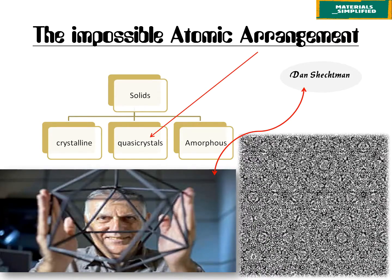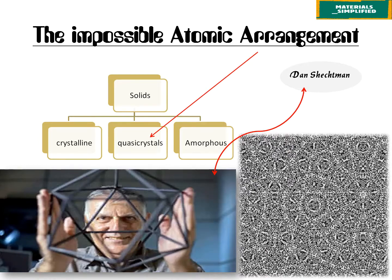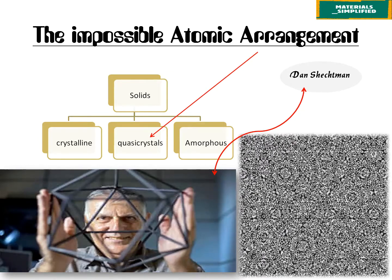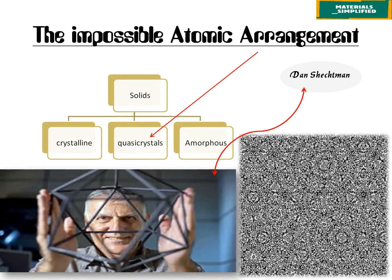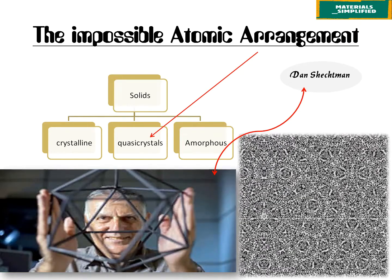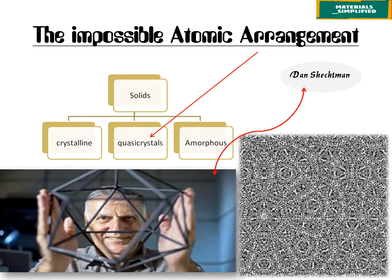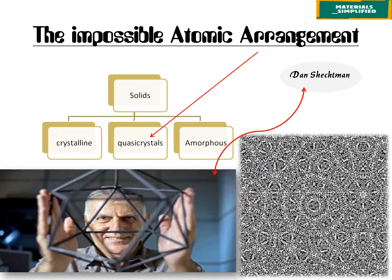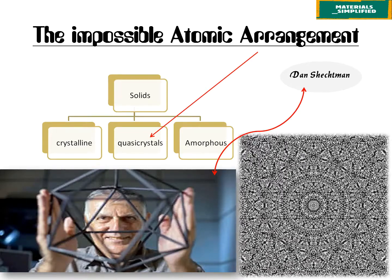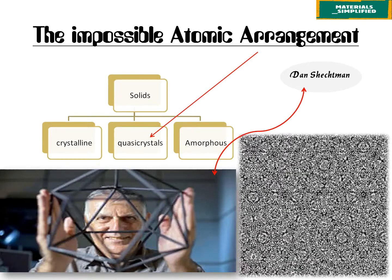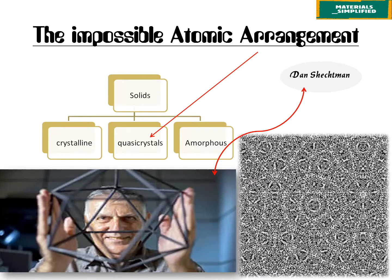On the right we have an image or a GIF of quasicrystals. Before Shechtman discovered quasicrystals in 1982, solids classified on the basis of structure were divided into crystalline and amorphous. Crystalline are ordered and have periodicity, whereas amorphous are those which lack both order and periodicity.